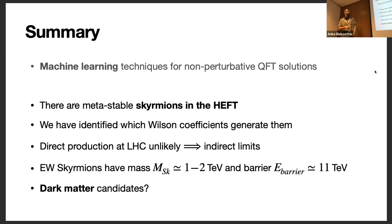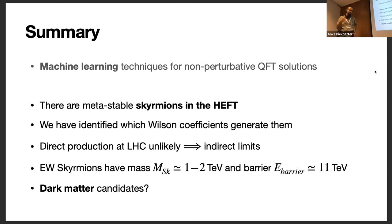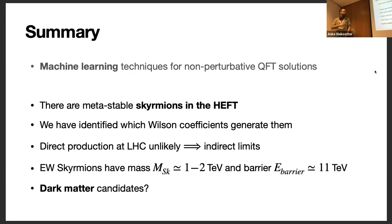To conclude: we have developed machine learning techniques to solve non-perturbative problems in QFT and applied them to electroweak skyrmions. We have found that they exist in the electroweak theory in the non-linear realization (HEFT), identified for which Wilson coefficient values they exist, established that they will not be produced at near-future colliders but via indirect limits should have a mass around 1 TeV, and noted that the possibility of electroweak skyrmions as dark matter is interesting but still an open question requiring further work. Thank you.